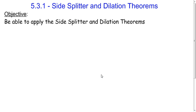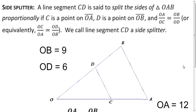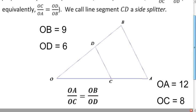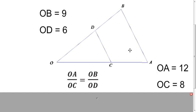So what is a side splitter? It's a segment that, like the name says, it splits the sides, but it splits them proportionally. For example, in this diagram, segment CD is a side splitter, and we can verify that with the information that's given.